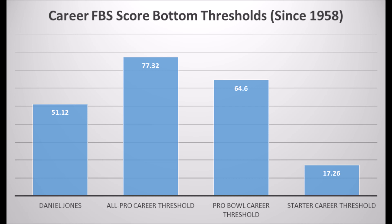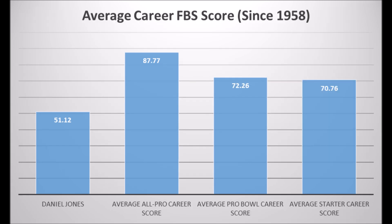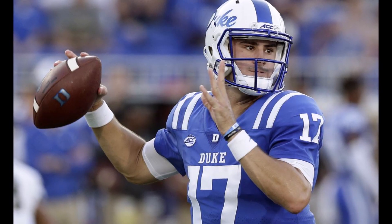That's the biggest issue with Daniel Jones — his career data has not been great. When you look at average career scores, average all-pro score, average pro bowl score, and average starter score, he's way below those standards. This doesn't mean he has a zero percent chance of becoming an NFL starter — the bottom threshold was 17.26 — but the data says there is less likelihood of him becoming an NFL starter compared to other prospects entering the draft this year.